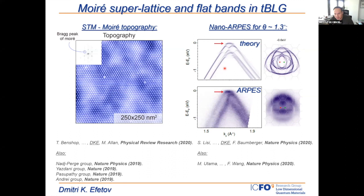The band structure becomes strongly renormalized when we approach the so-called magic angle of 1.1 degrees. Here I show the theoretical band structure of twisted bilayer graphene at a twist angle of 1.3 degrees. What's striking is that the Fermi surface becomes extremely complicated, the bands break into different sections, and specifically at zero energy we get ultra-flat bands separated by band gaps to higher-order bands. This can be seen in ARPES experiments done by our collaborators, Philip Baumberger in Geneva.